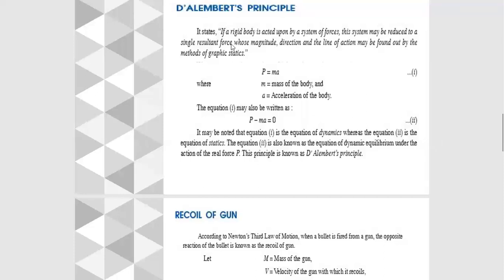According to this statement, there is a mathematical term P = ma, where m is the mass of the body and a is the acceleration of the body. This equation is known as the equation of dynamics.